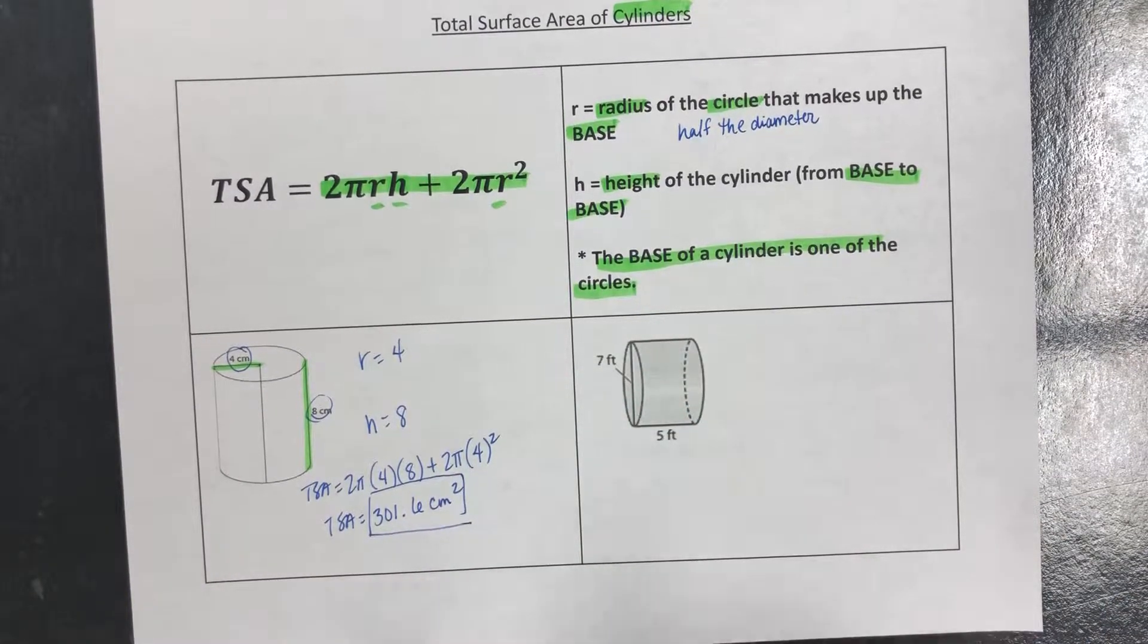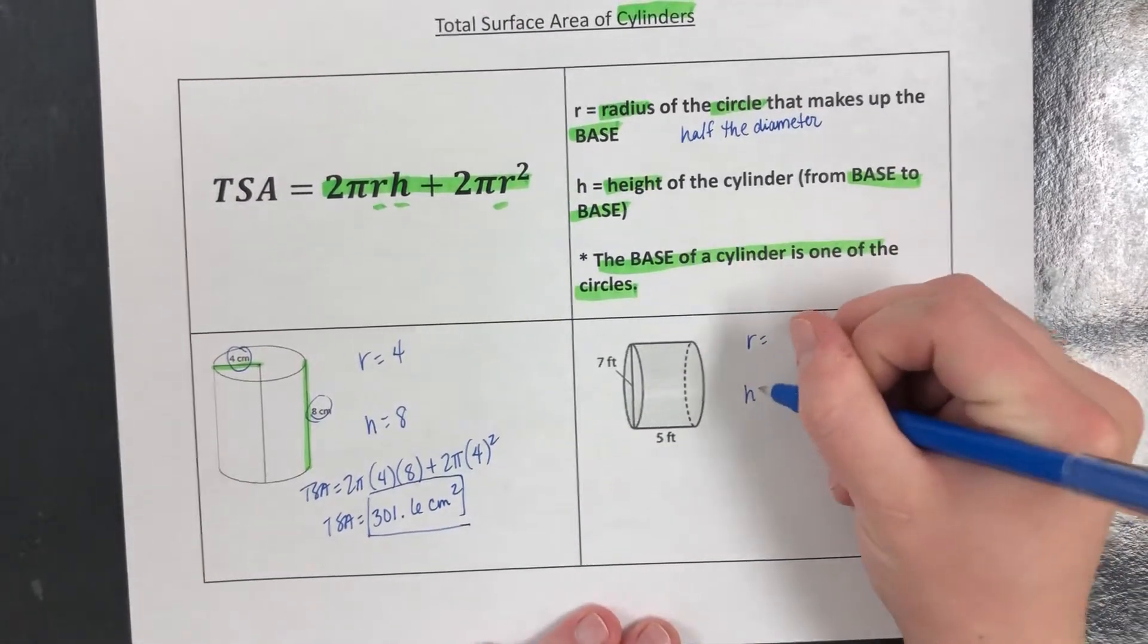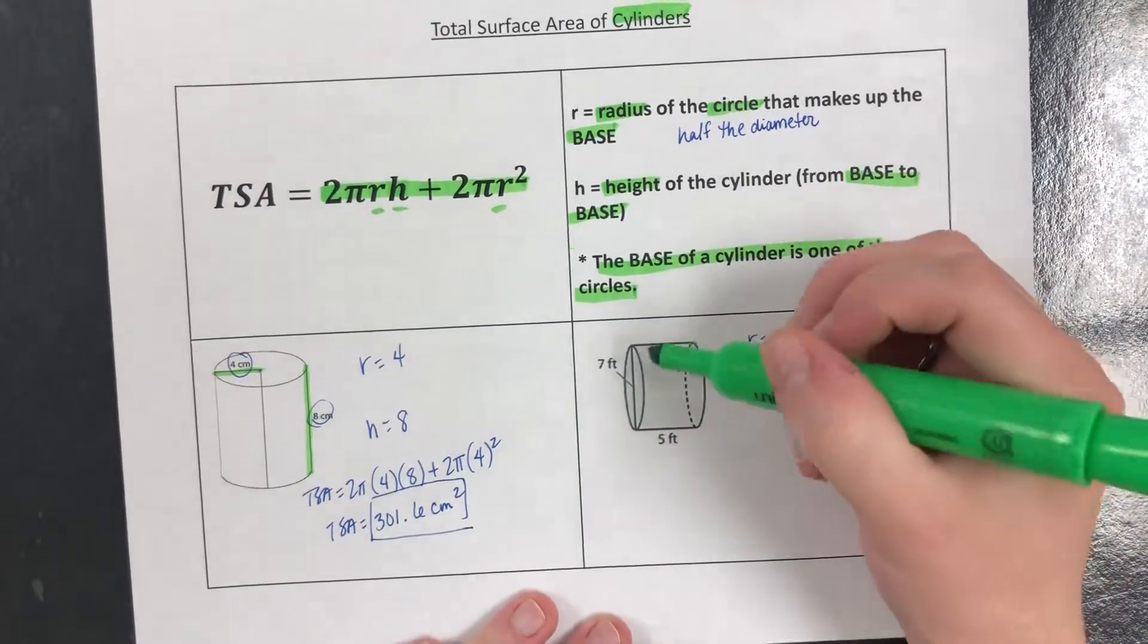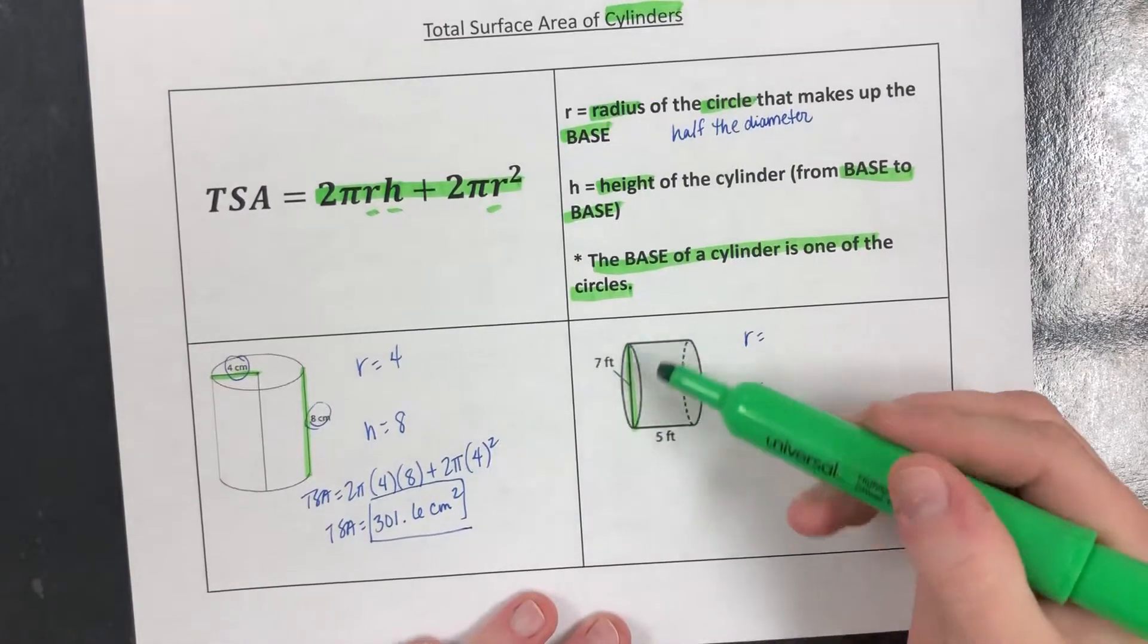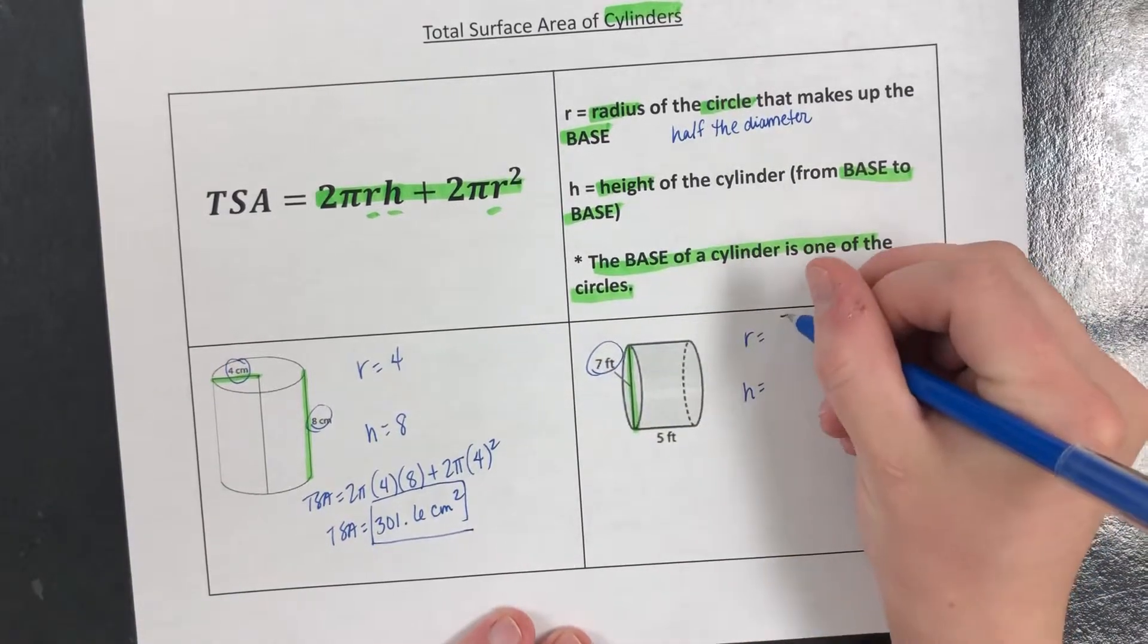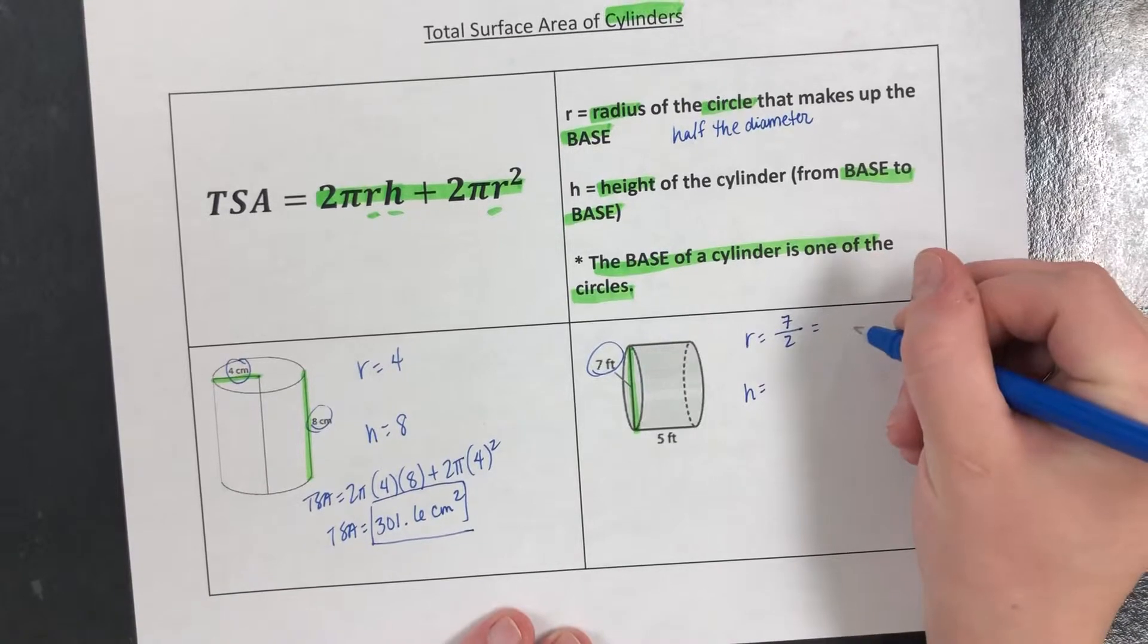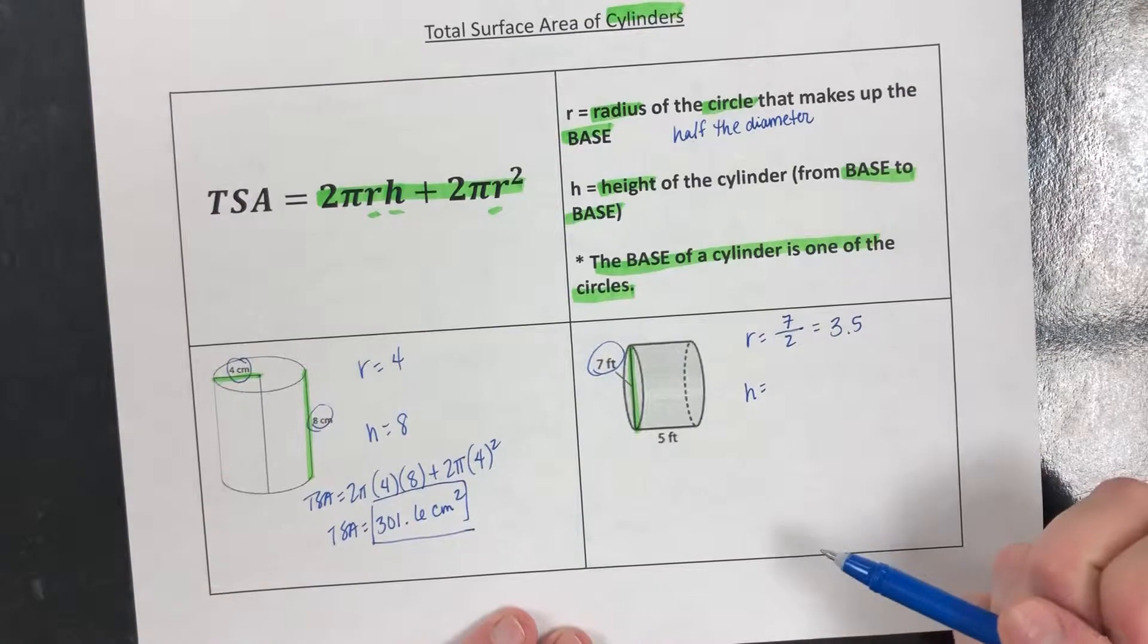Let's do another example. Again, we need the radius and we need the height. In this cylinder's case, the radius is going to come from this right here, but notice that line goes from one side to the other, so that means we've been given the diameter. If our diameter is 7, we have to divide it by 2 to get the radius. That means the radius for this cylinder is 3.5.